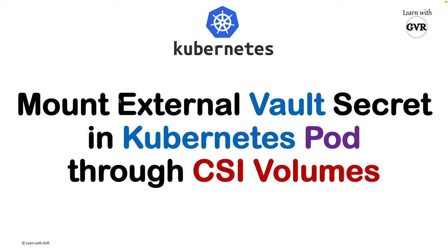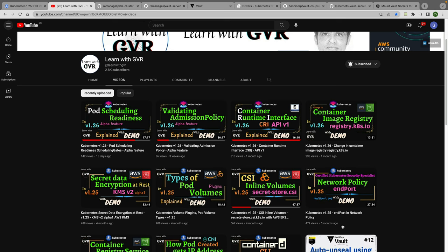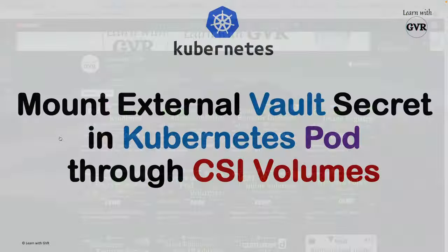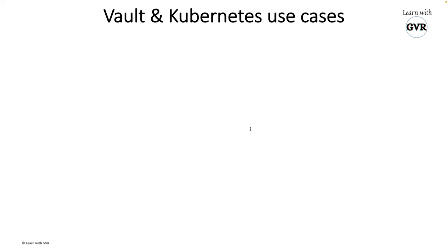In this session we will try to understand how to mount an external Vault secret in a Kubernetes pod through a CSI volume. In Kubernetes 1.25, CSI inline volumes are graduated. I have created a video on CSI inline volumes, secret store CSI driver, and along with a demo of using AWS secrets in a Kubernetes pod. Here the Vault server is external — hosted somewhere — and you access its secrets via CSI inline volume.